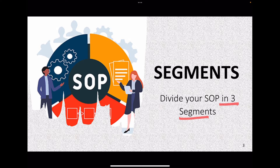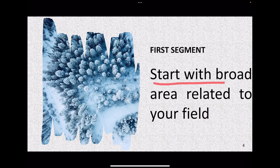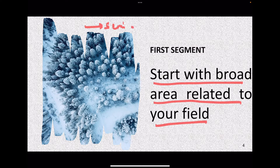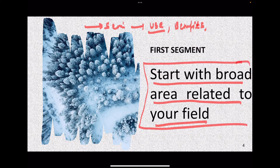The first segment is to start with the broad area of research related to your field. For example, if you are doing research in semiconductors, start with the uses of semiconductors — where they are used, when they are used, the benefits of semiconductors, how they are used as a device. These broad area topics form the basis of your first paragraph in the Statement of Purpose.